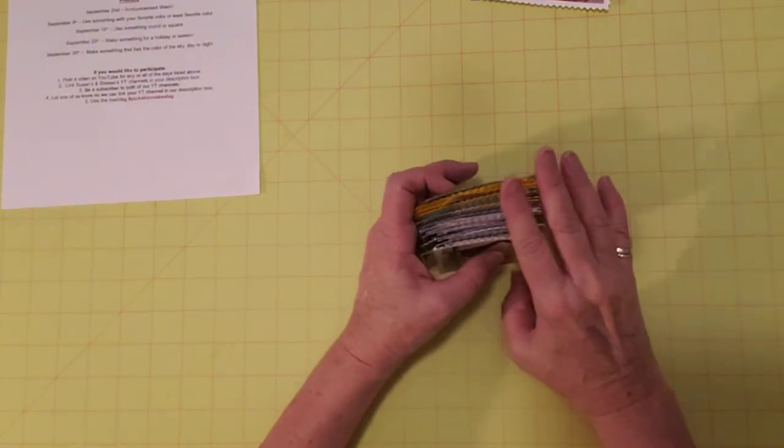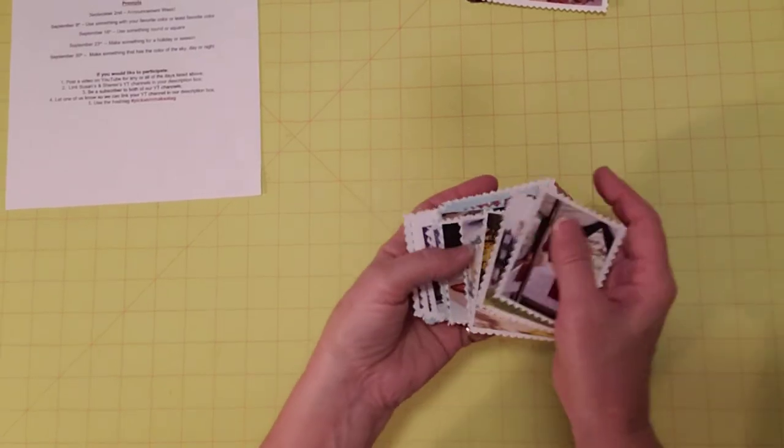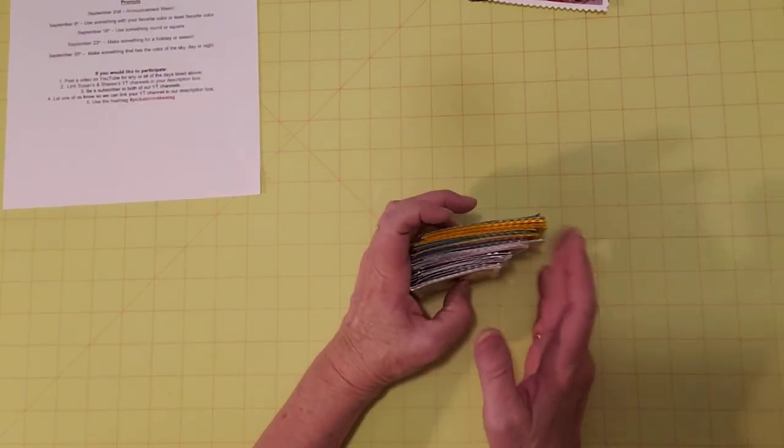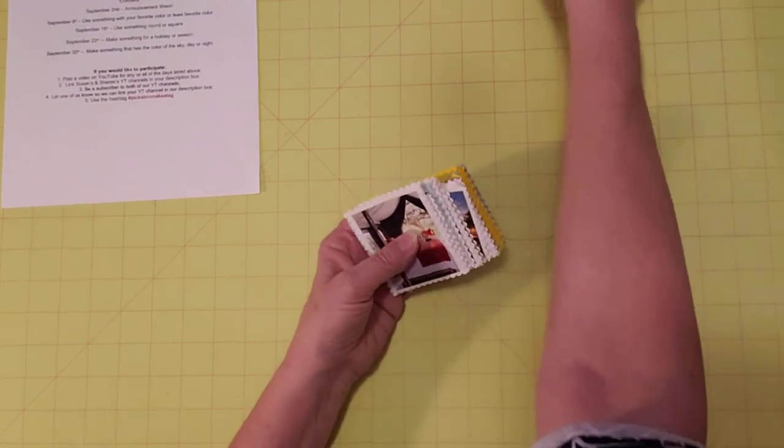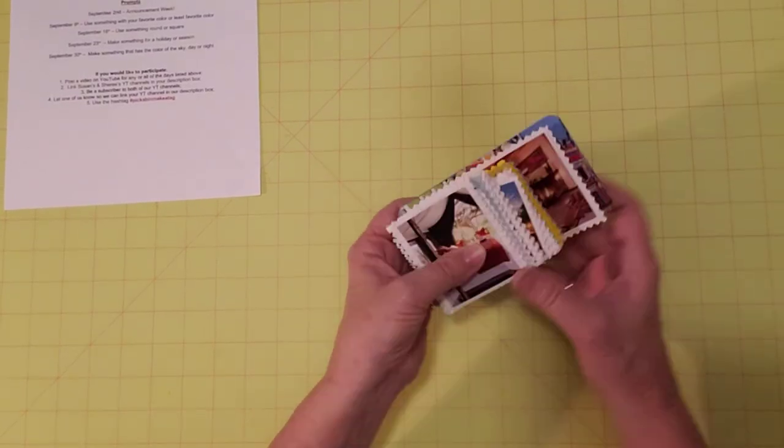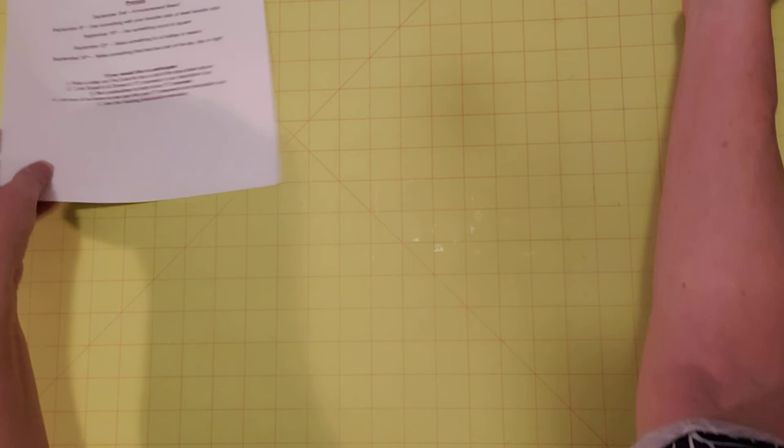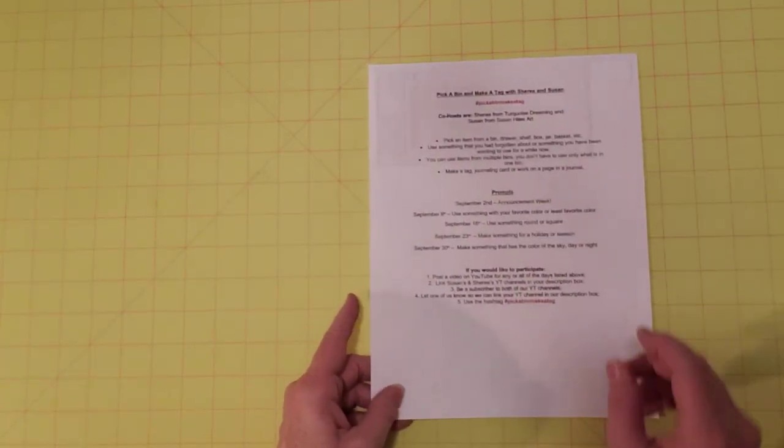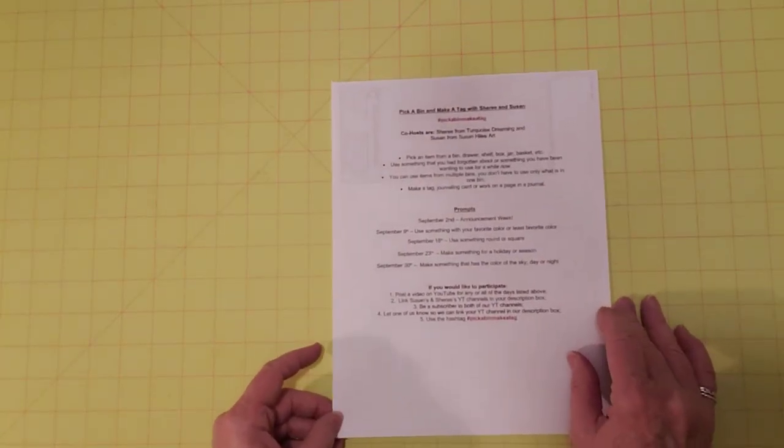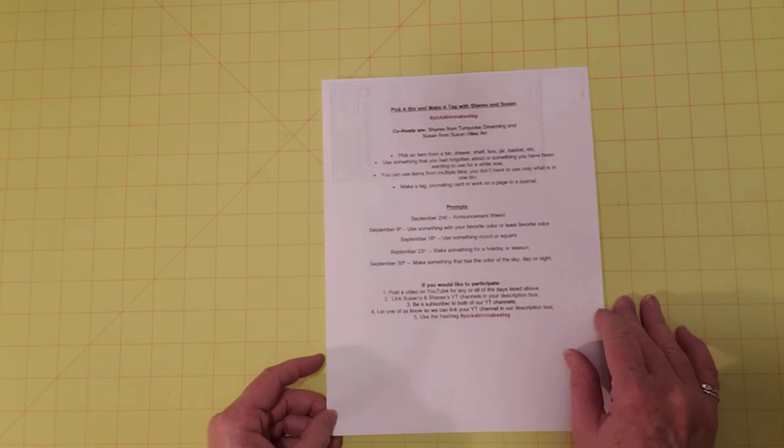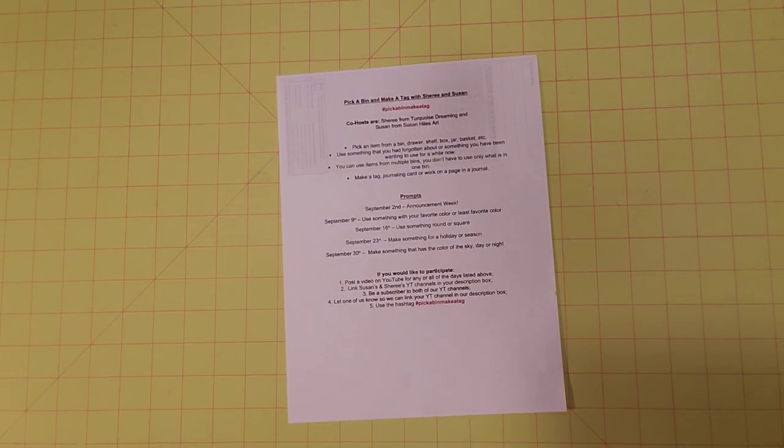That could be your square rectangle thing, right? If you wanted to actually stick to that rule, you could do this for your squares and rectangles. I hope you enjoyed and I hope you'll join us. Have some fun in September crafting with us. I will see you in my next video. Have a great day. Happy crafting.